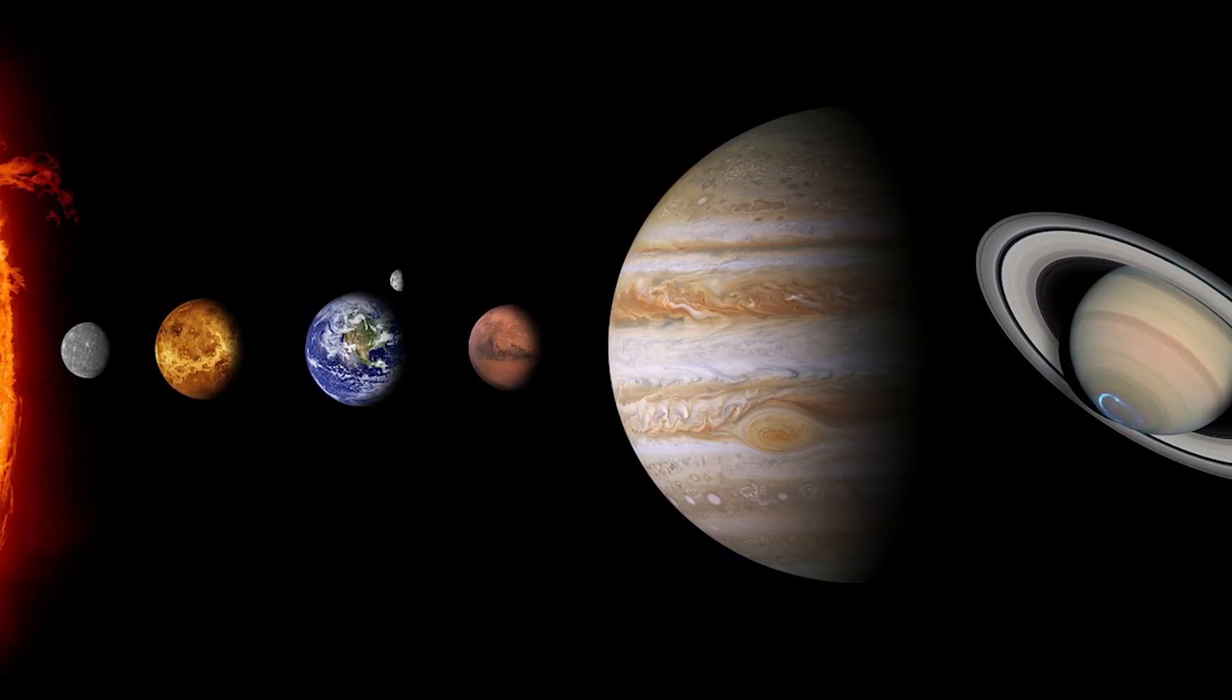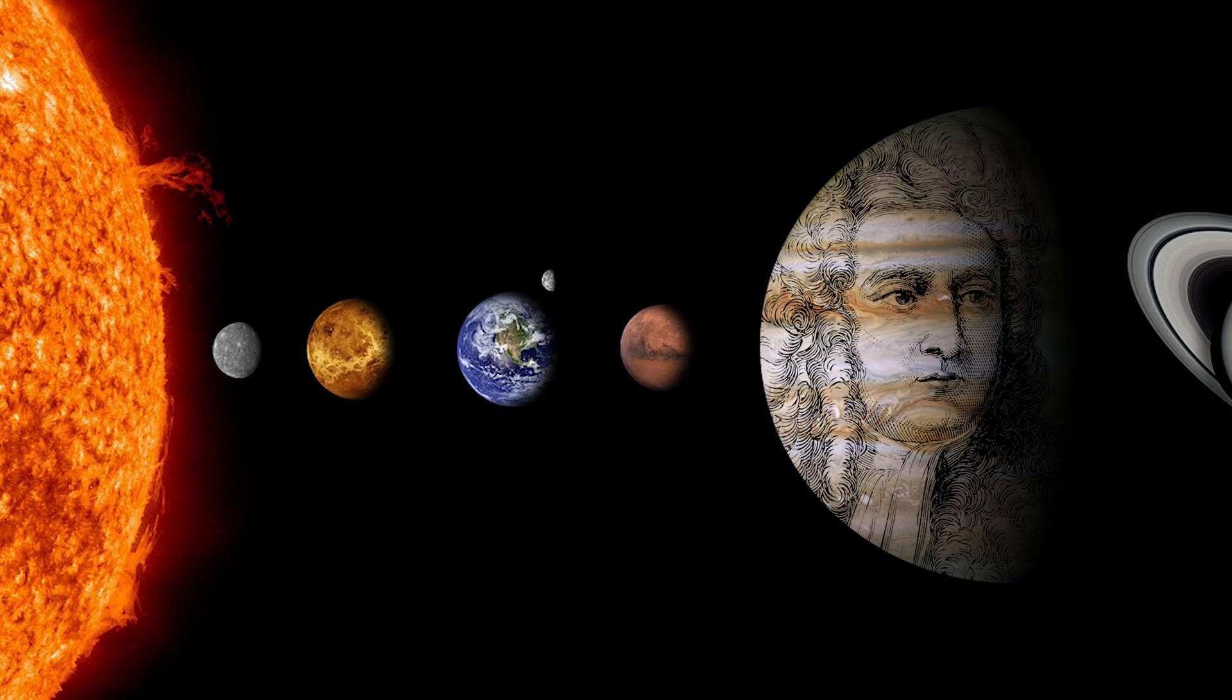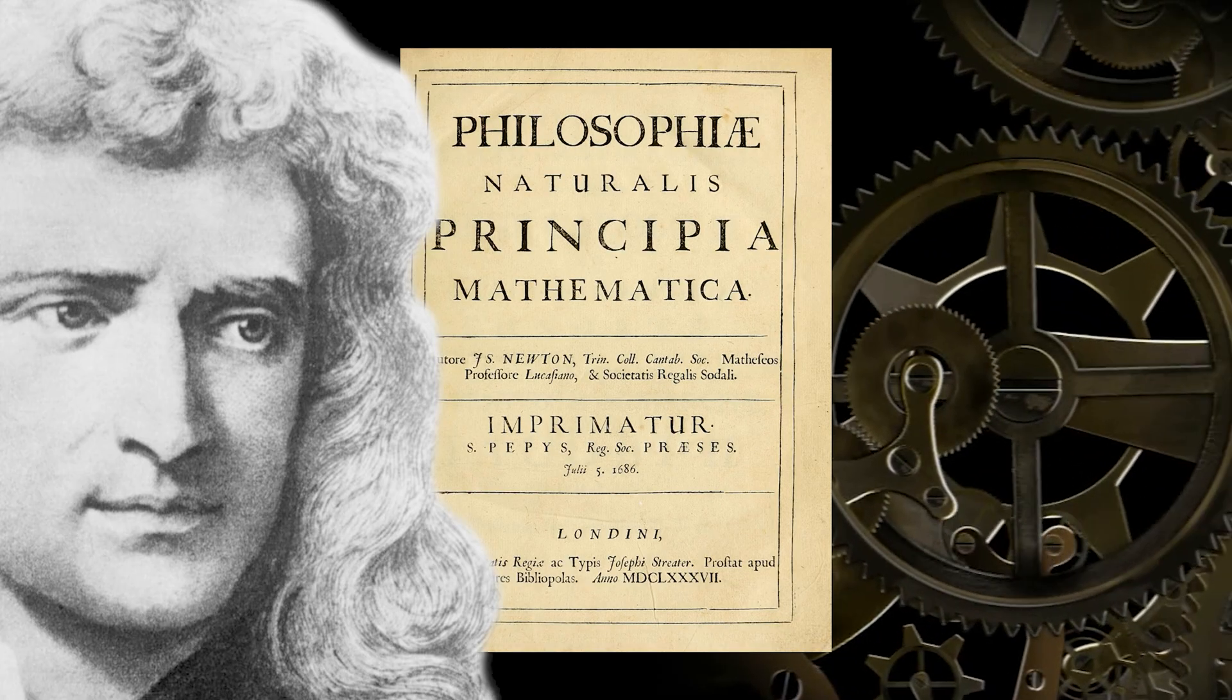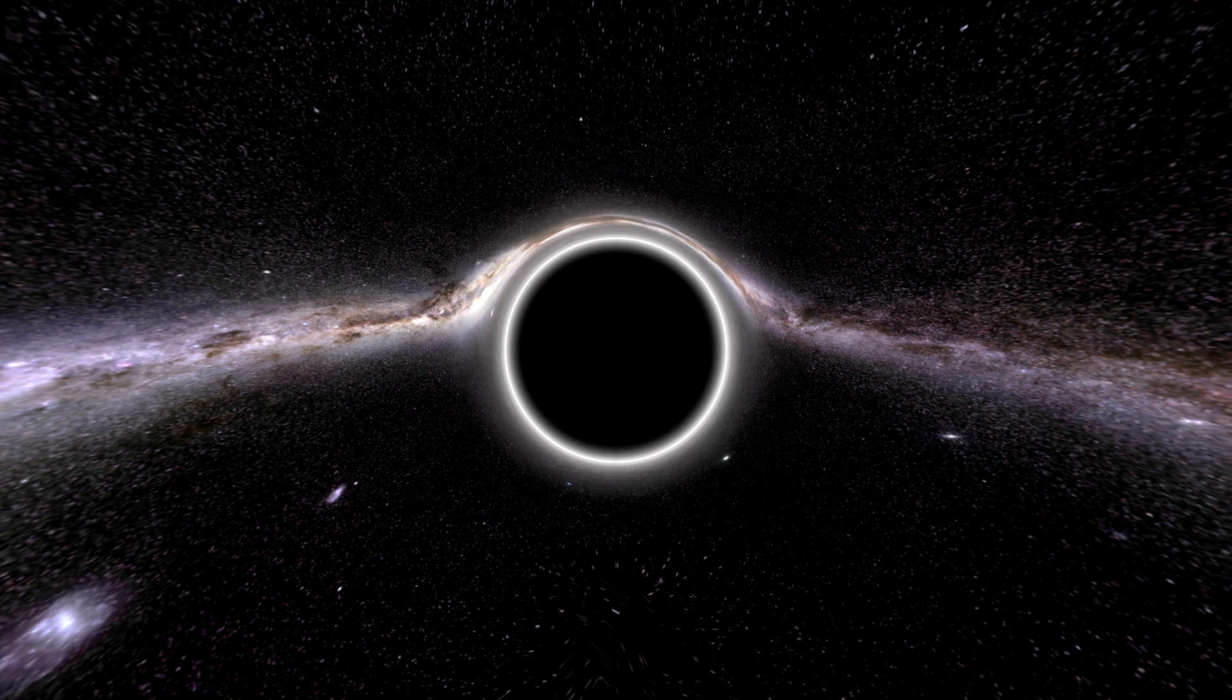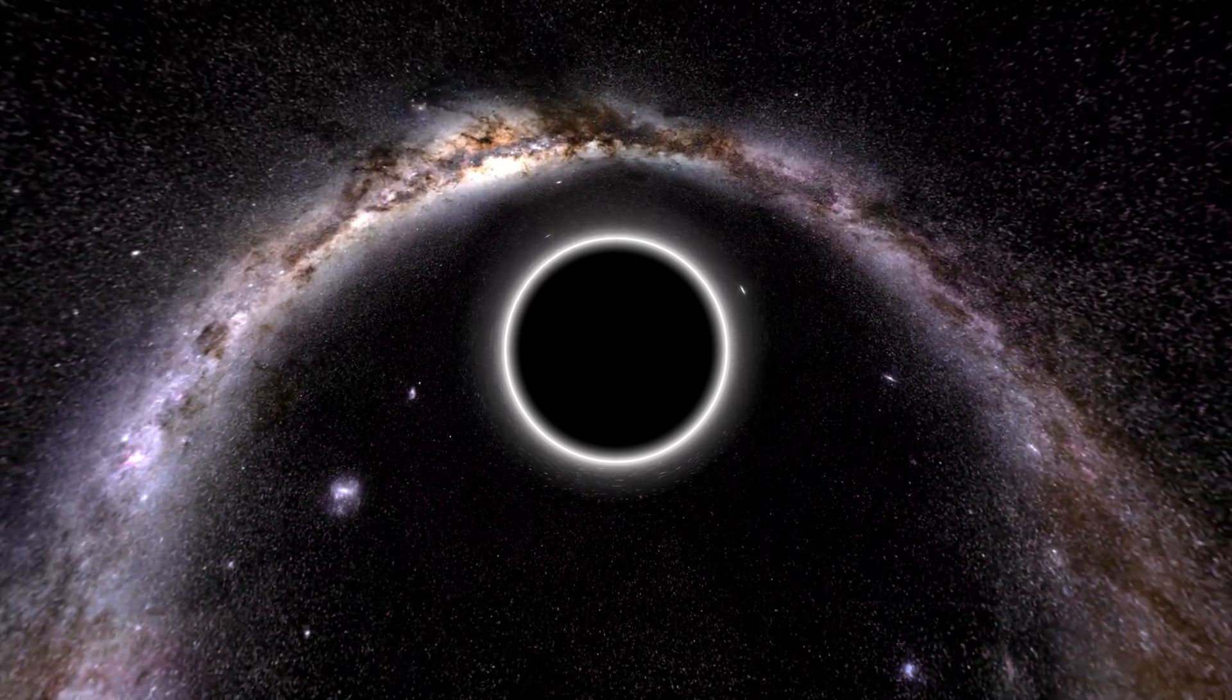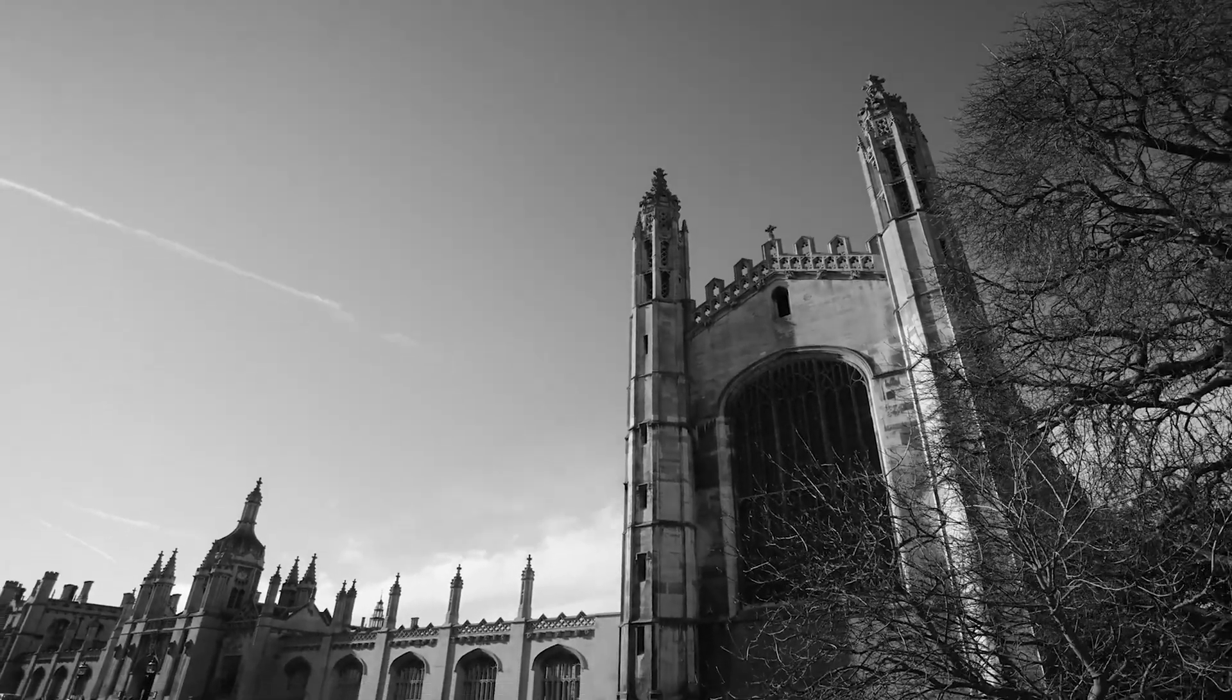Even today, he remains at the top of the list of the most influential scientists in history. Newton's book, The Mathematical Principles of Natural Philosophy, published in 1687, is one of the most important books in history. It formed the basis of classical mechanics. With this work, Newton established the law of universal gravitation and the three laws of motion, which dominated the world of science for the next three centuries.